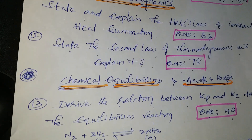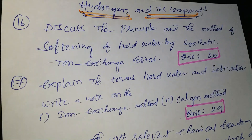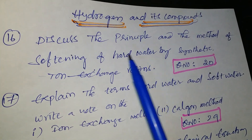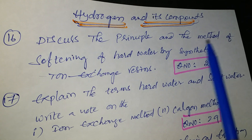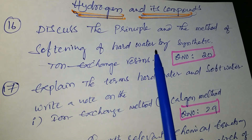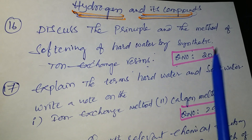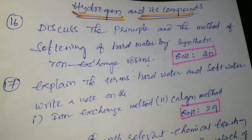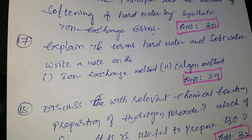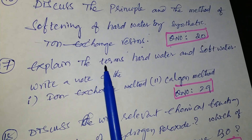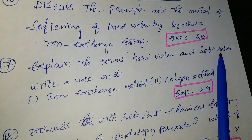Next lesson is hydrogen compounds. Discuss the principle and methods of softening of hard water by synthetic ion exchange resin — question number 20 from the Telugu academic textbook and other material. Next question: explain the terms hard water and soft water.